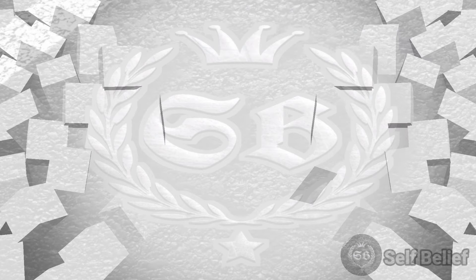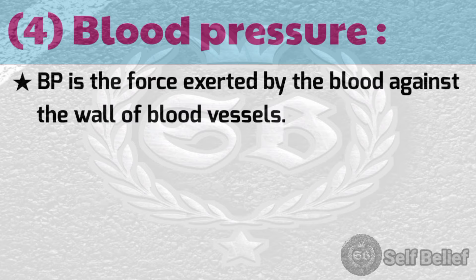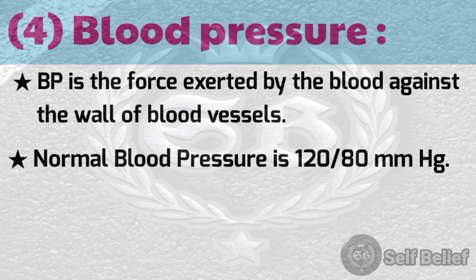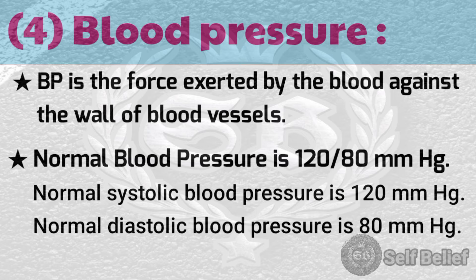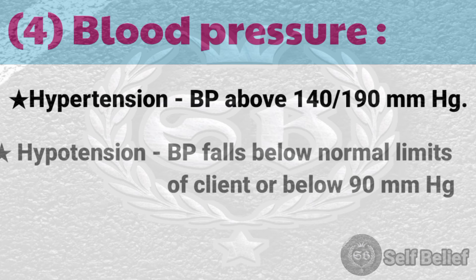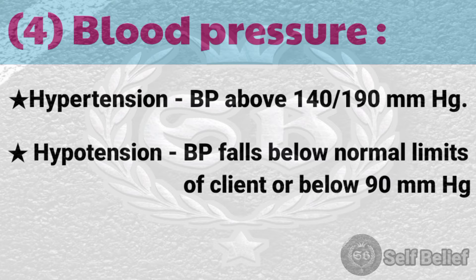The fourth vital sign is blood pressure. Blood pressure is the force exerted by the blood against the walls of blood vessels. Normal blood pressure is 120/80 mmHg, where 120 is the normal systolic and 80 is the normal diastolic blood pressure. Hypertension means BP above 140/90 mmHg. Hypotension means BP falls below the normal limits or below 90 mmHg.